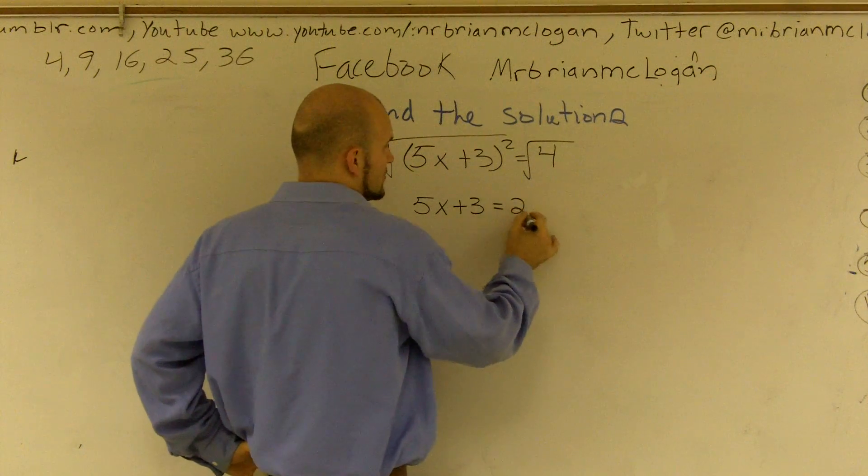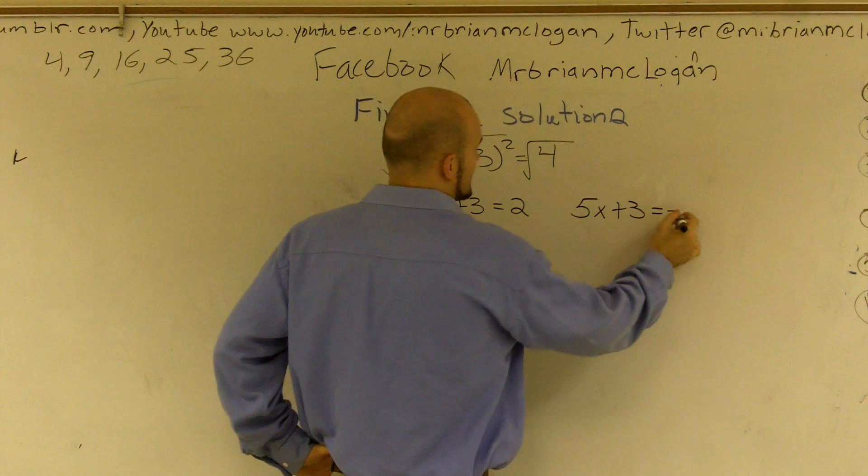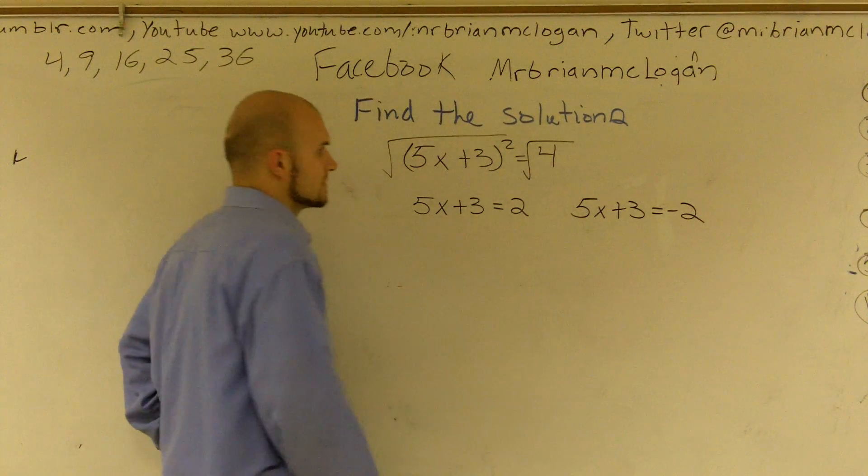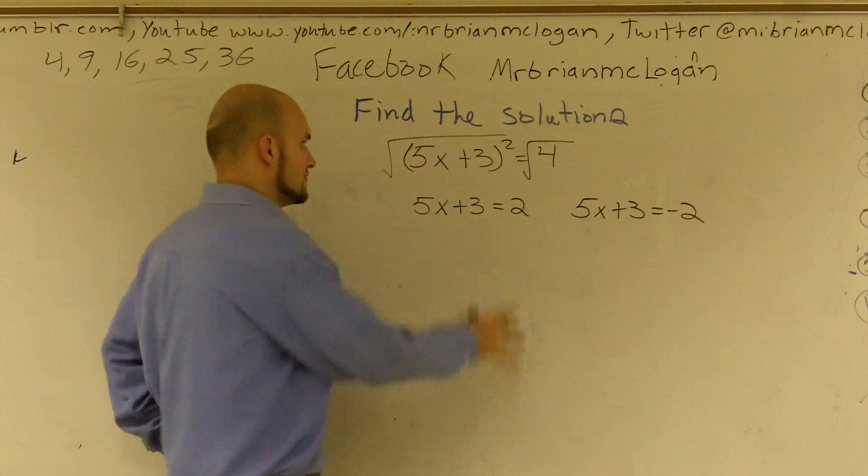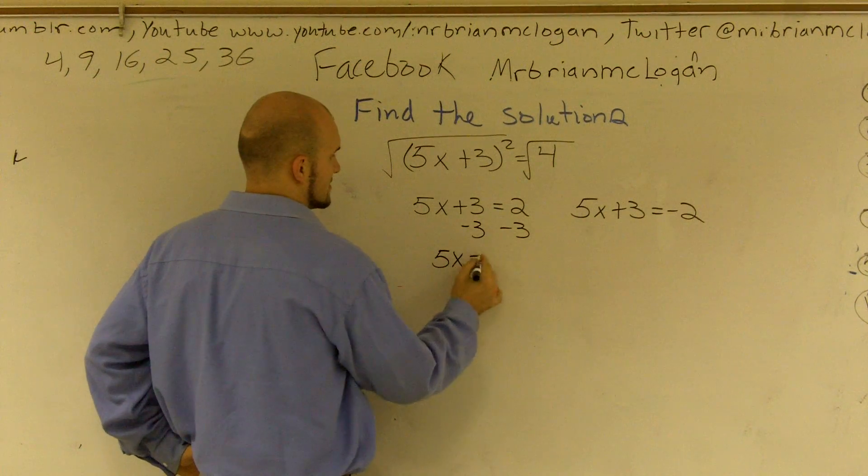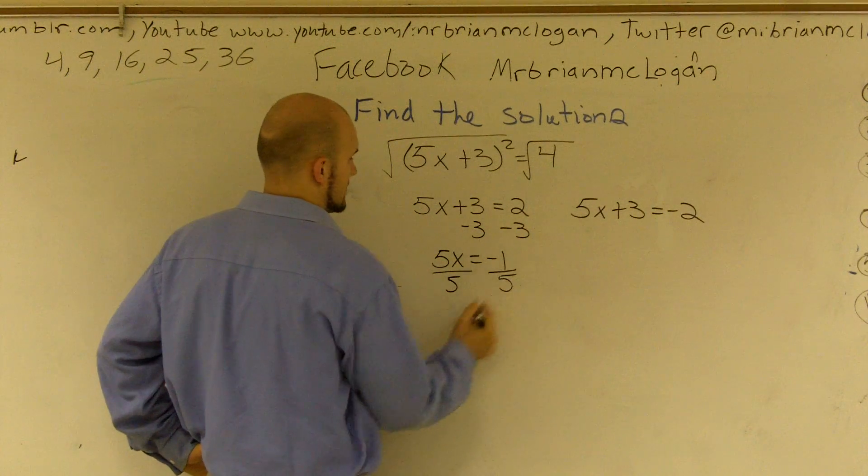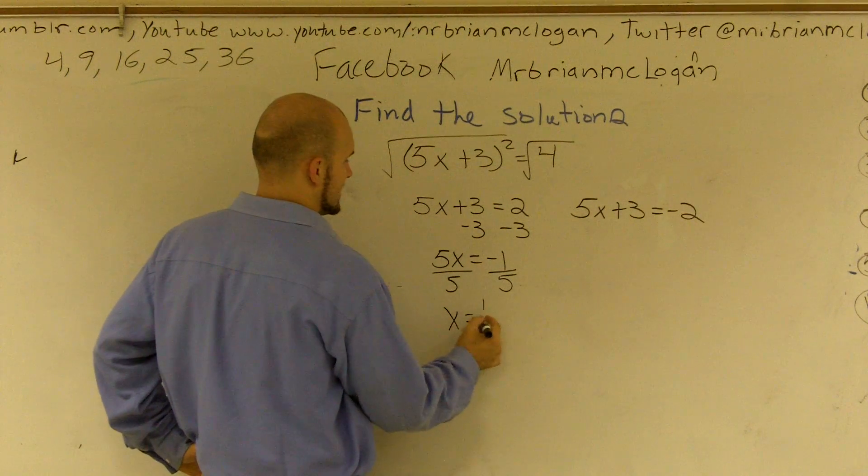Since I'm taking the square root, I'm going to say it's going to equal 2 and I'm also going to say 5x plus 3 could also equal negative 2. Now, to solve for each x, I subtract 3. So I get 5x equals negative 1 divided by 5. x equals negative 1 fifth.